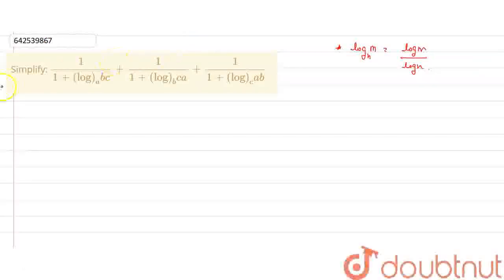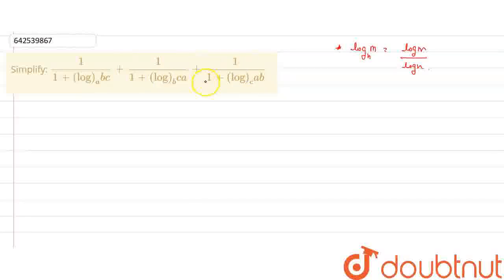We have been given a question: Simplify 1 upon 1 plus log bc base a, plus 1 upon 1 plus log ca base b, plus 1 upon 1 plus log ab base c.